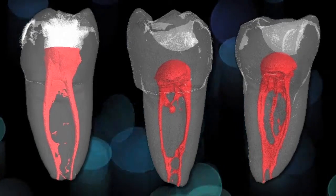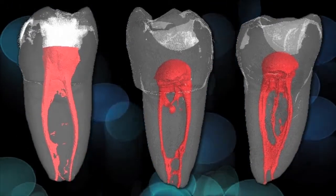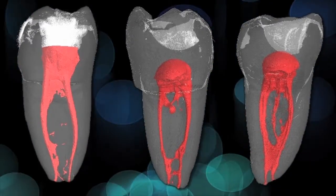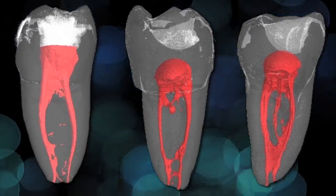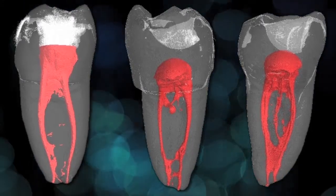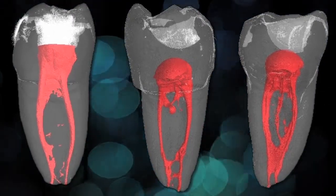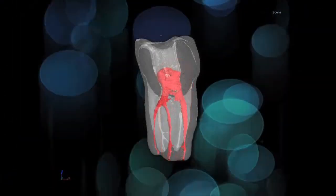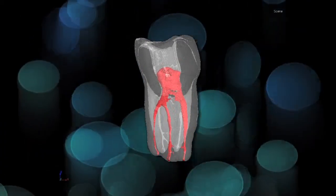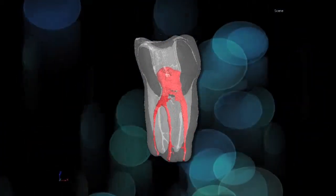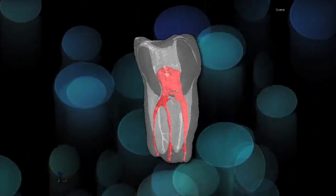These images depict some of the variations seen in the mesial roots of the lower molars. Variations in the morphology of roots and root canal systems create challenges which we, as dental practitioners, must be able to recognize.